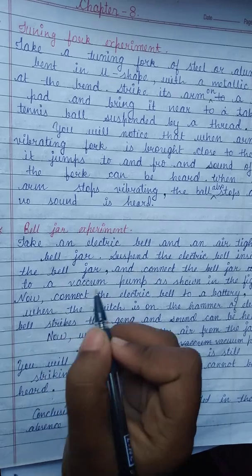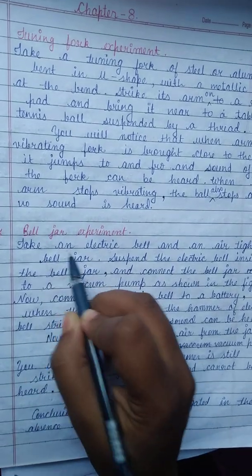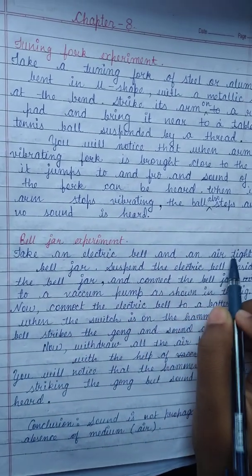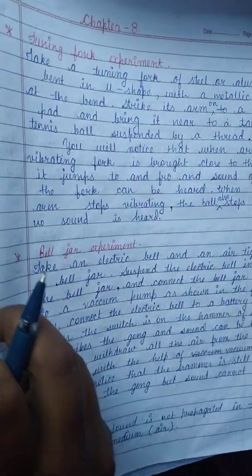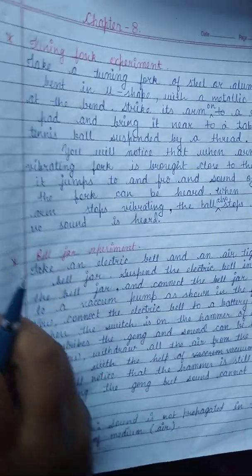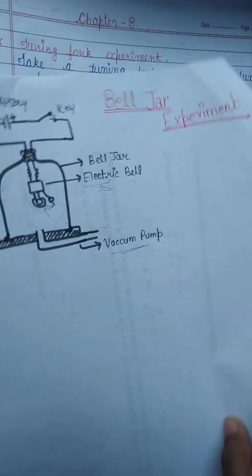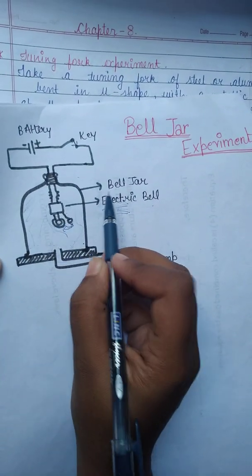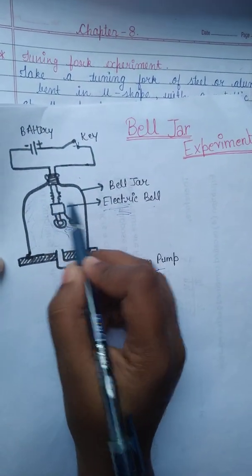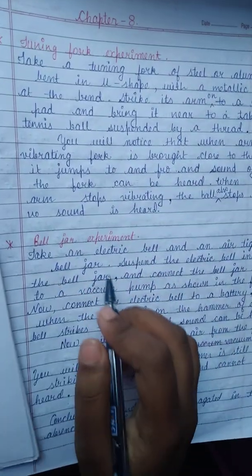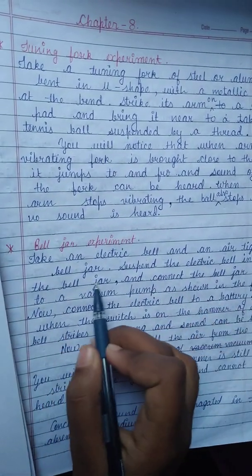Take an electric bell and an airtight bell jar. Now suspend the electric bell inside the bell jar. This is your bell jar. The electric bell is suspended inside the bell jar.